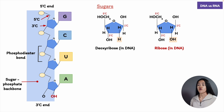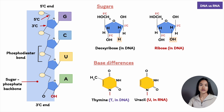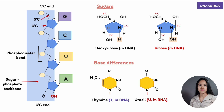With the bases, RNA contains uracil instead of the thymine found in DNA, as well as adenine, guanine, and cytosine. Uracil can also base pair with adenine, just like thymine can, so the same DNA base pairing rules also apply to RNA.